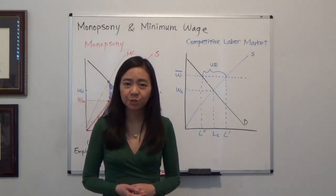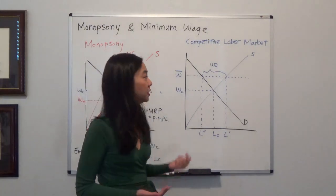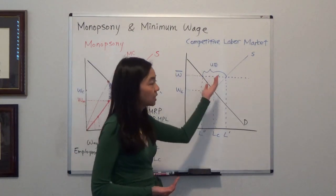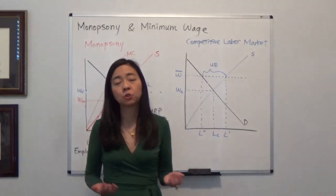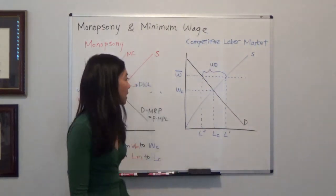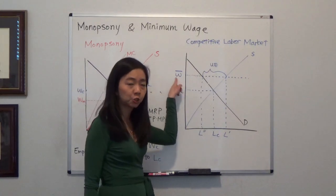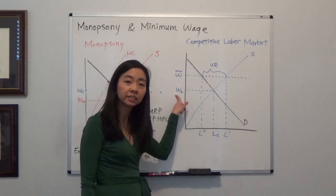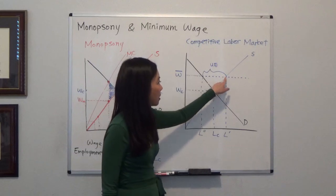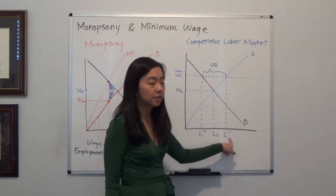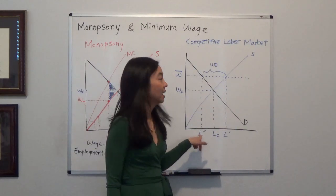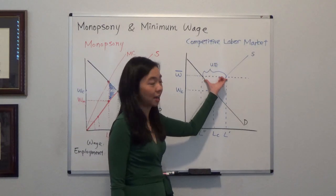So from your principles of microeconomics or macroeconomics, you'll learn that in a competitive labor market, minimum wage law in general is a bad thing. Why is that? Because if you have a minimum wage that is higher than the competitive wage, then that's going to cause the labor supply to be higher than labor demanded, and therefore you are going to have unemployment.